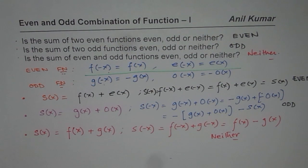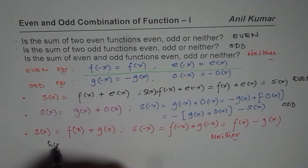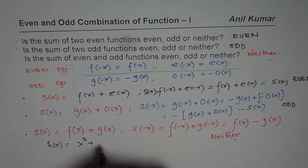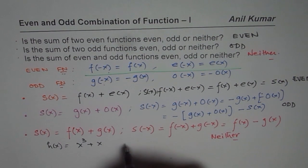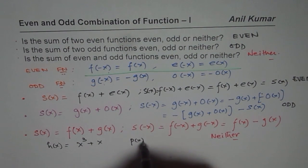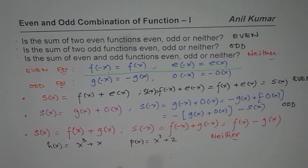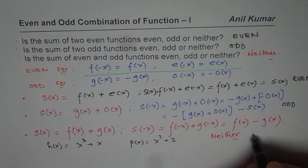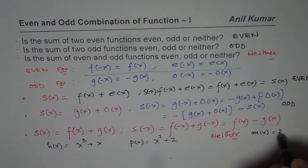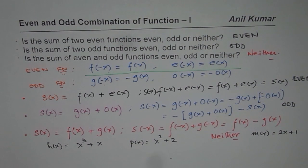As a practical exercise, if I give you h(x) = x³ + x, since both terms are odd, it should be an odd function. On the other hand, p(x) = x² + 2 has both even terms, so the result is even. If I give you m(x) = 2x + 1, this is neither, since we have a combination of an odd term and an even term.